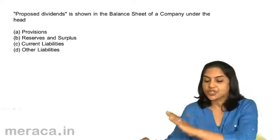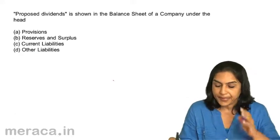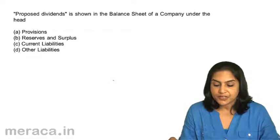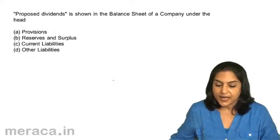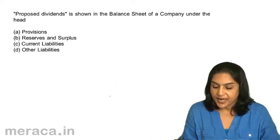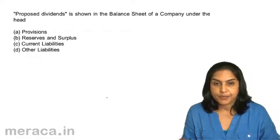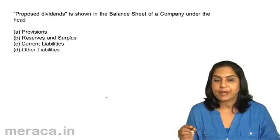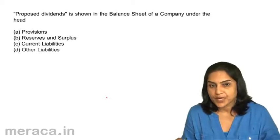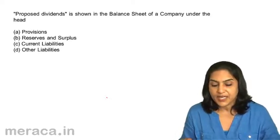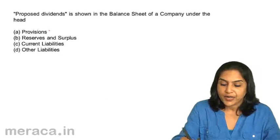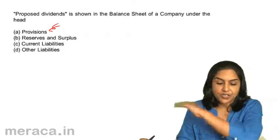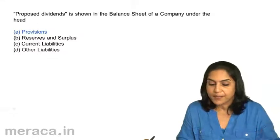Proposed dividend is shown in the balance sheet of a company under the head: A. Provisions. B. Reserves and Surplus. C. Current Liabilities. D. Other Liabilities. Proposed dividend — it has only been proposed, it has not yet become a liability, and therefore it is shown under Provisions. Correct answer is A. Proposed dividend is shown under Provisions in the balance sheet.